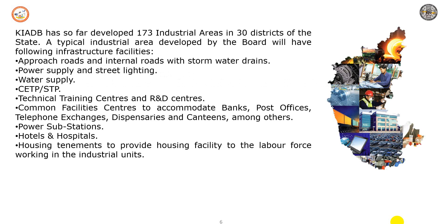So far, there are 173 industrial areas across 30 districts of the state. A typical industrial area developed by the board has the following infrastructure: approaching roads and internal roads, storm water drainage, street lighting, water supply, CETP and STP connections, technical training centers, and R&D centers nearby.